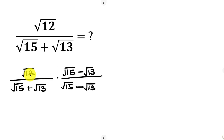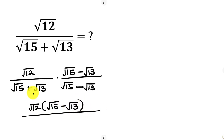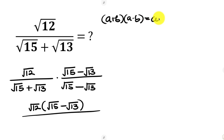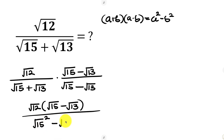Now we can write this in a better way. So this is the square root of 12 multiplying the square root of 15 minus the square root of 13, all over. Now the denominator looks somewhat like (a + b)(a - b), and an expression like this is the identity difference of two squares, which is a squared minus b squared. So this will be the square root of 15 raised to power 2 minus the square root of 13 raised to power 2, which is difference of two squares.